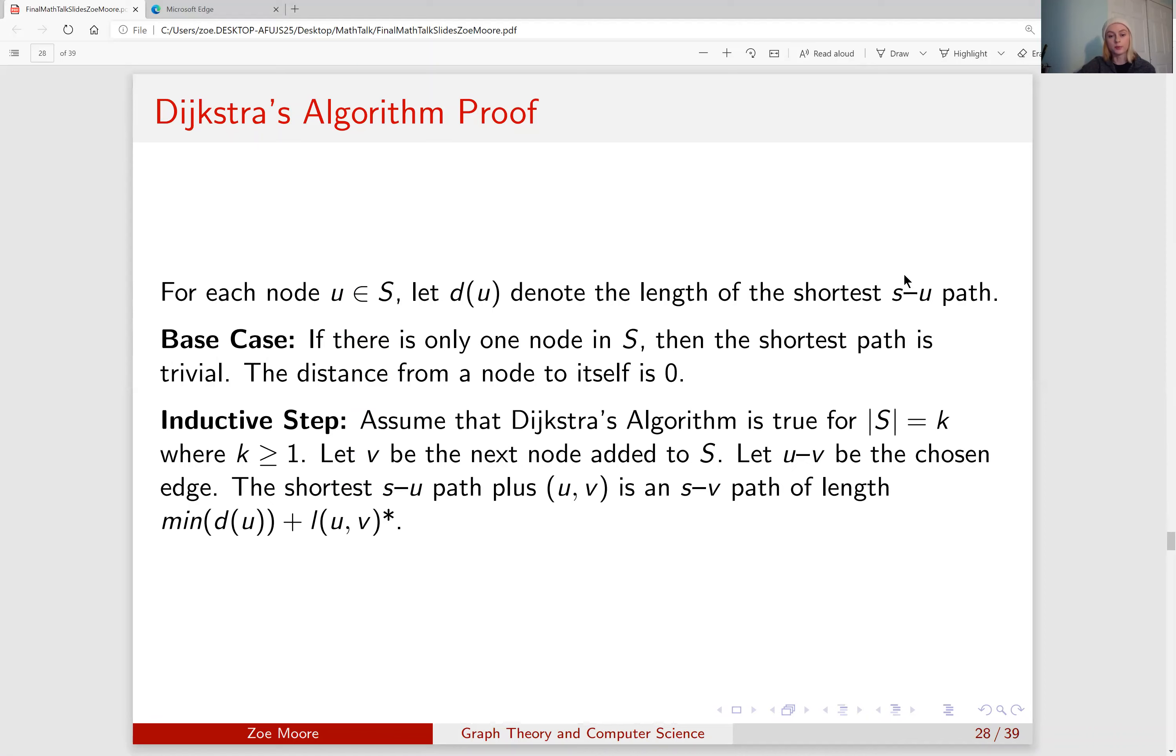Now our inductive step. We will assume that Dijkstra's algorithm is true for K elements in our set of explored nodes S, where K is greater than or equal to 1. We will then choose V to be the next node added to S, and we will let UV be the chosen edge. The shortest S to U path plus UV is our S to V path where its length is the minimum of the path from S to U plus the length of the edge from U to V.